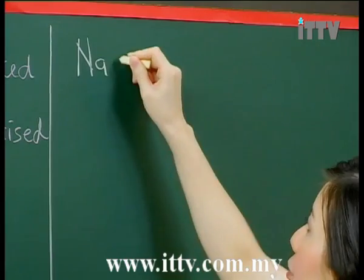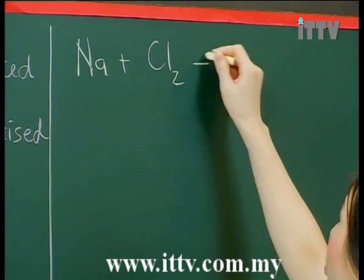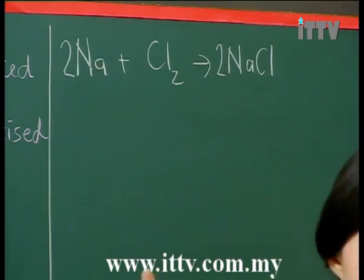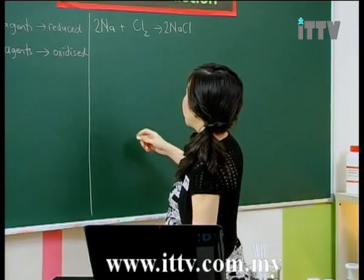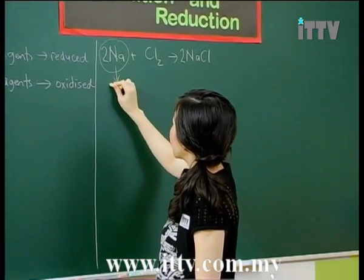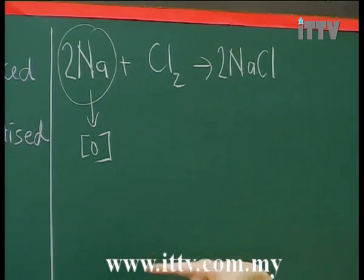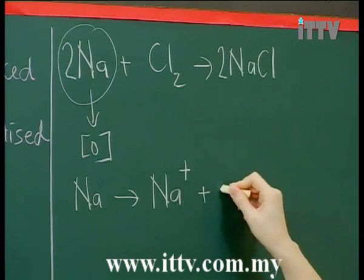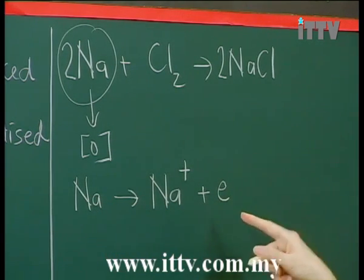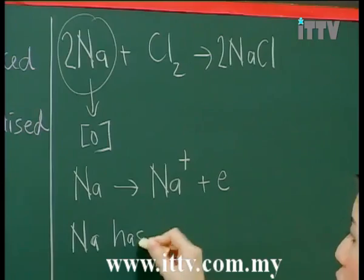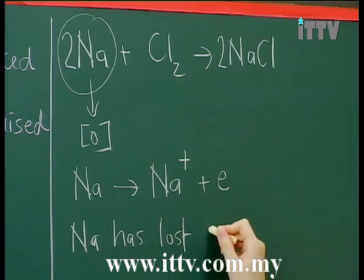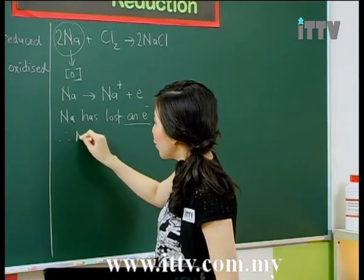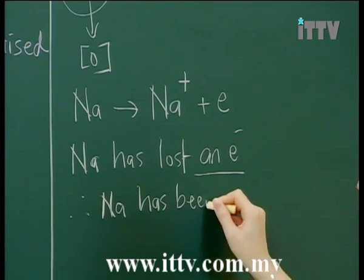Let us look at the reaction between sodium and chlorine to produce sodium chloride. The substance being oxidised here is sodium — it has undergone oxidation. In order for sodium to become Na⁺, sodium would have to lose one electron. So sodium has lost one electron, and because it has lost an electron, we say that sodium has been oxidised.